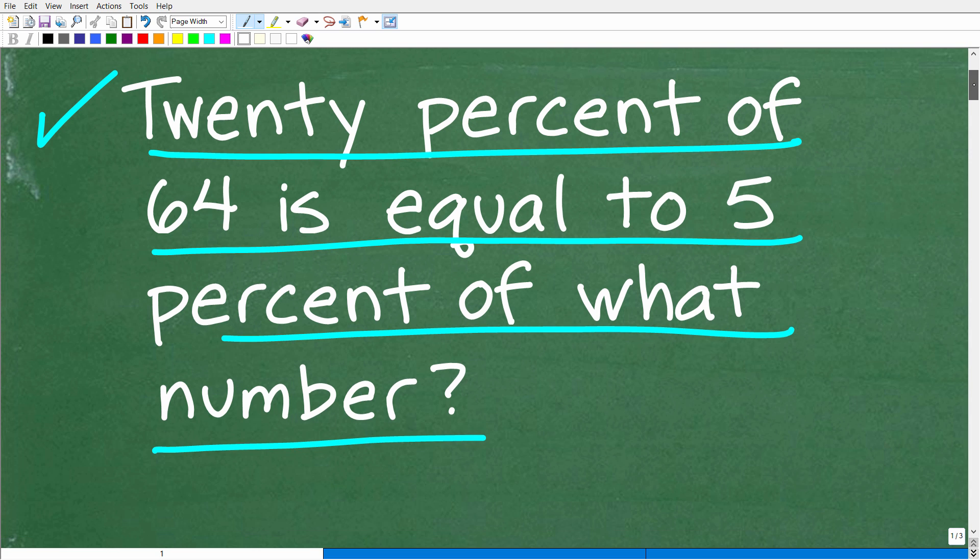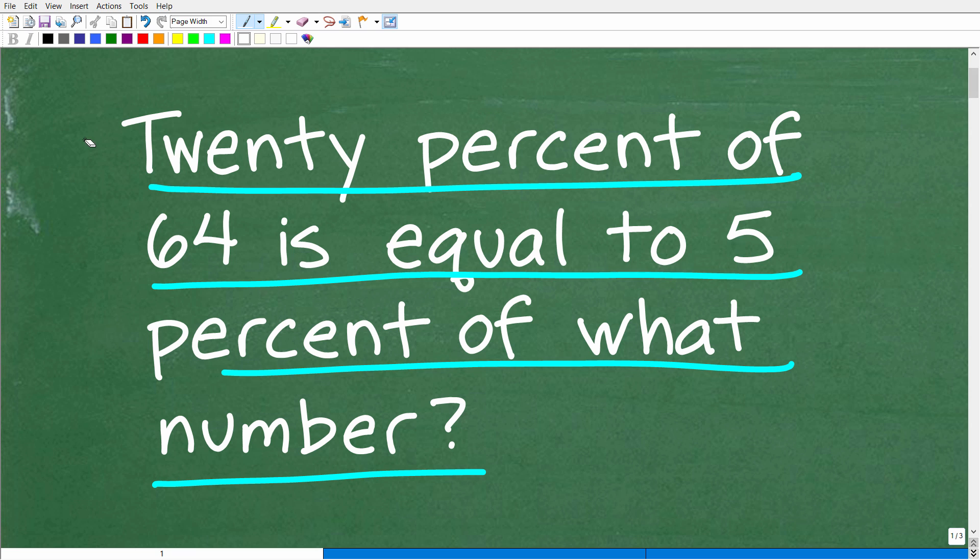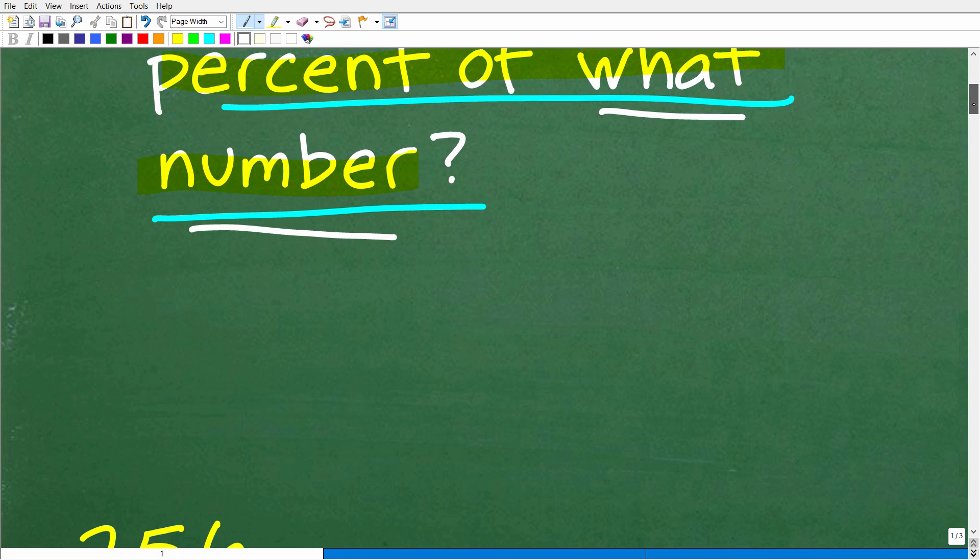Let's go ahead and take one more look at the question before I show you the answer. So 20% of 64 is equal to 5% of what number? Obviously we're looking for this particular number, and that number happens to be 256.